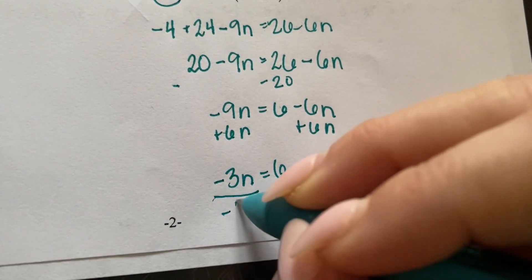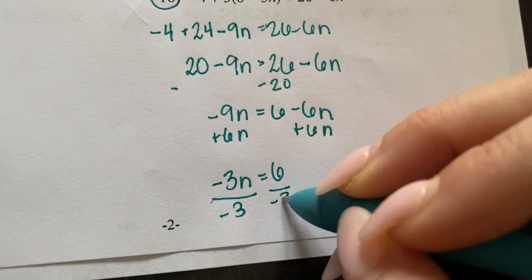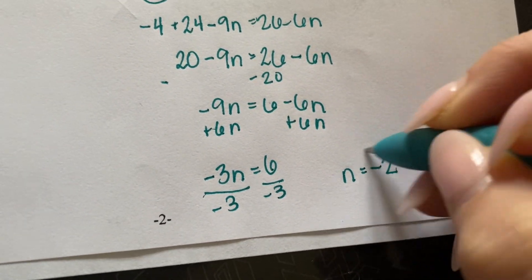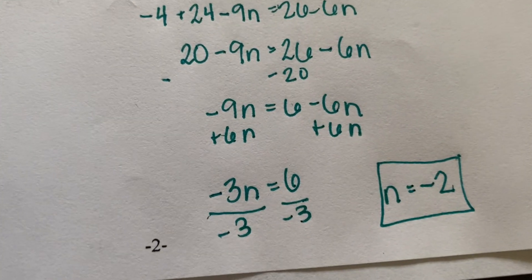Negative 2N equals 9. And I have a negative 9N equals 8.